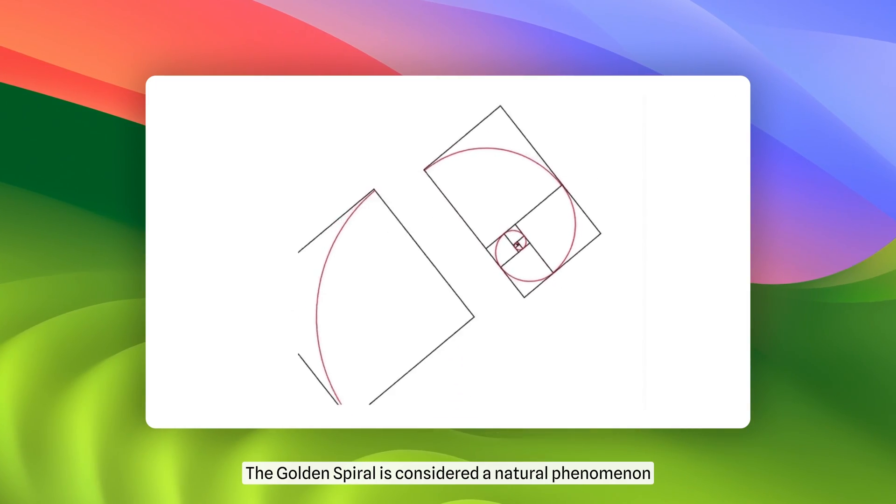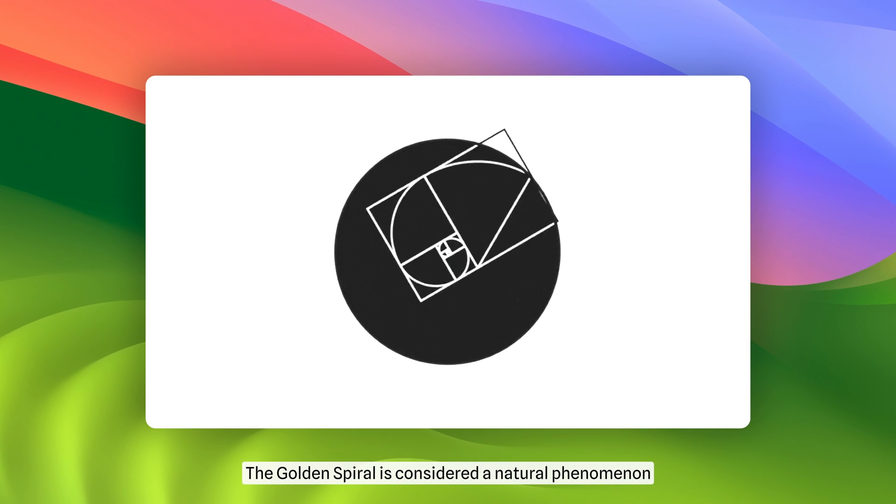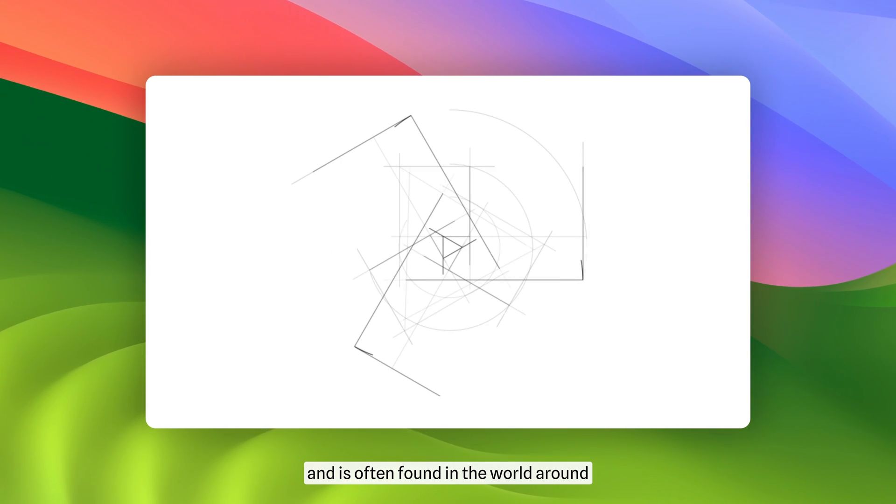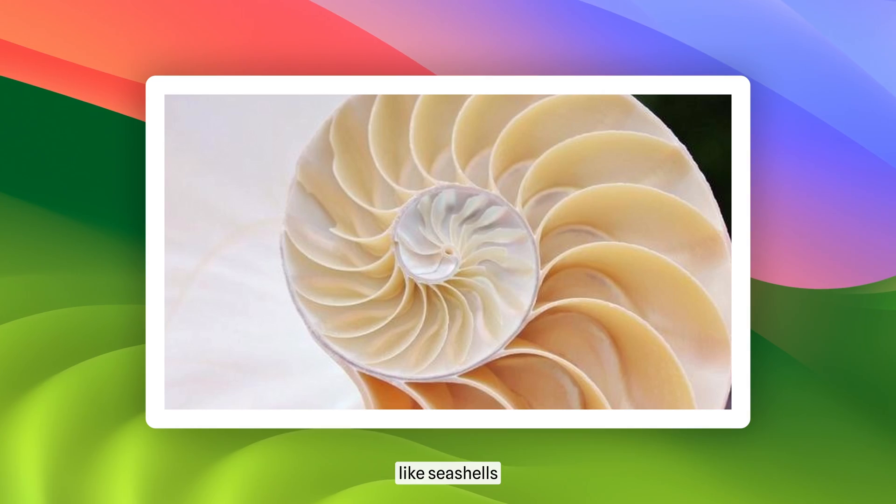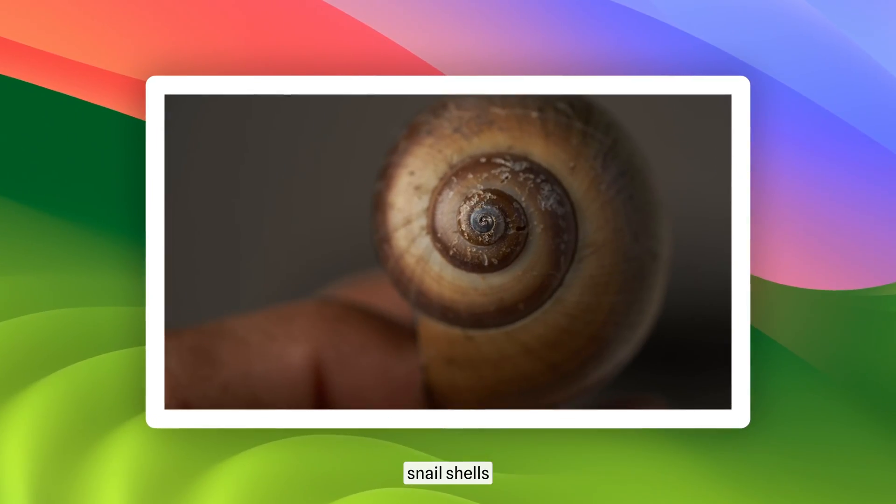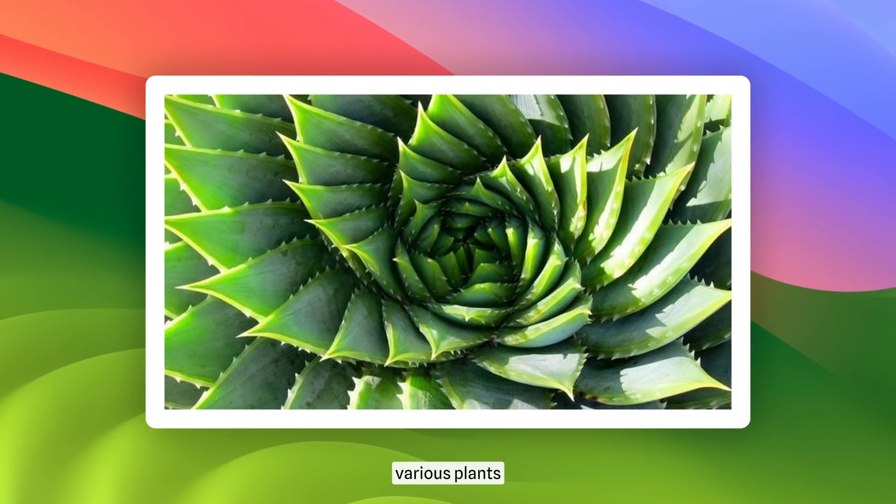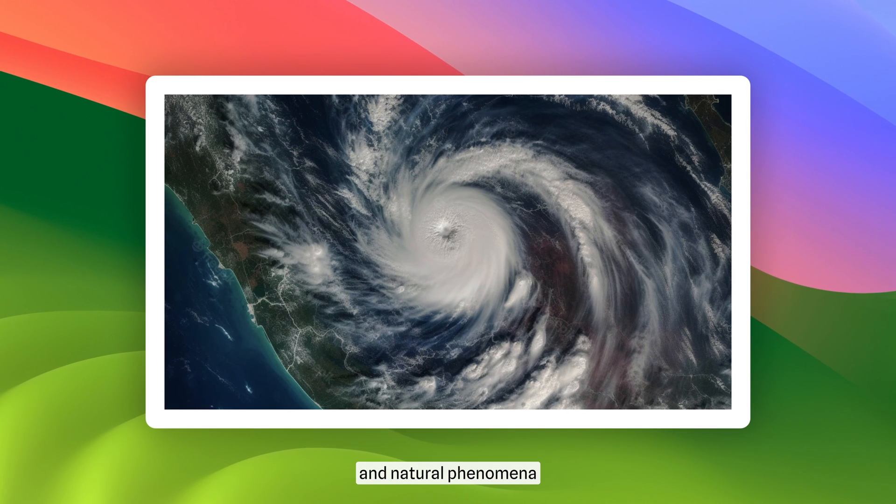The golden spiral is considered a natural phenomenon and is often found in the world around us and in nature, like seashells, snail shells, various plants, and natural phenomena.